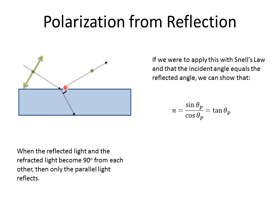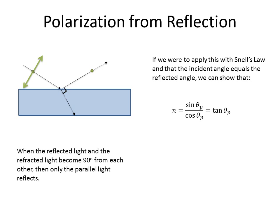So when we get this, whatever angle this happens to be, theta sub p, when the refracted and the reflected angles, when they're 90 degrees apart for these rays, we get this special case.